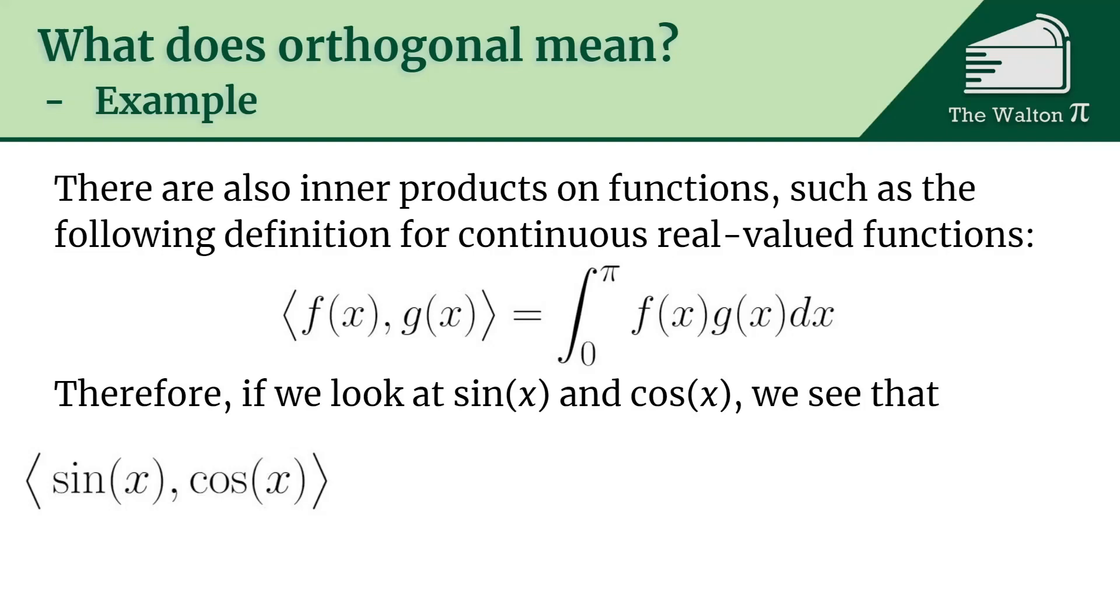The inner product of sin(x) and cos(x) is the integral from 0 to π of sin(x) times cos(x) dx, which is going to be sin²(x) divided by 2 evaluated from 0 to π, which when we actually go through and do that, we get 0.